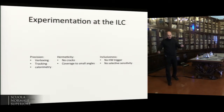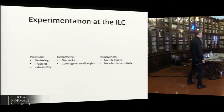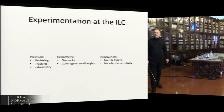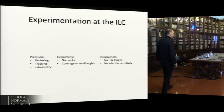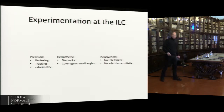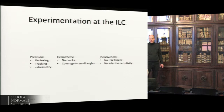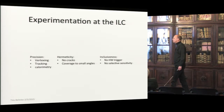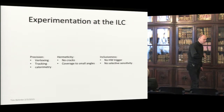Experimentation at the ILC has driving forces very similar to what has been discussed for FCC-ee. The strength of an e+ e- machine is precision, so you are designing a detector for precision physics from day one. You want precision measurements of vertexing, tracking, and calorimetry, understanding the complete final state — leptonic and hadronic. You want hermeticity, avoiding cracks, complete angular coverage, and coverage down towards the beam pipe. The ILC design calls for a detector with essentially no hardware trigger, recording everything and separating interesting events offline.